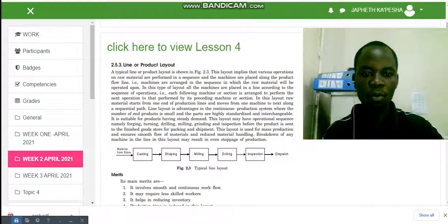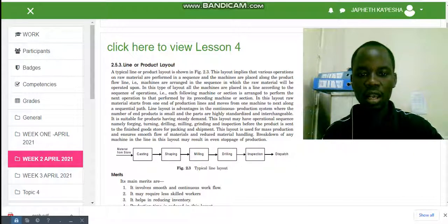In this layout, raw materials start from one end of the production line and move from one machine to the next along a sequential path. Line layout is advantageous in continuous production systems where the number of end products is small and the parts are highly standardized and interchangeable.